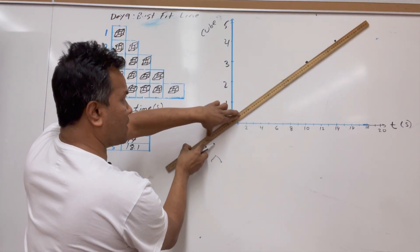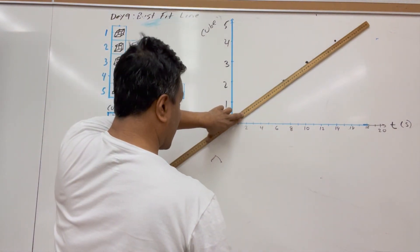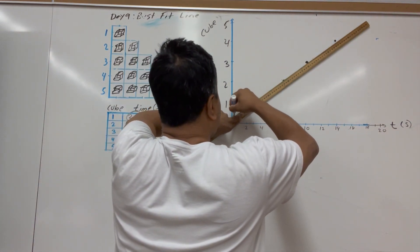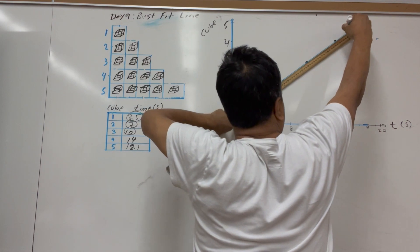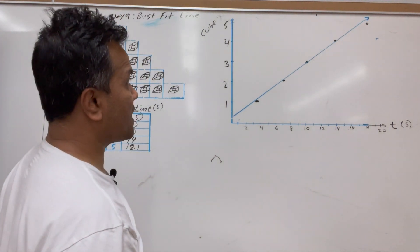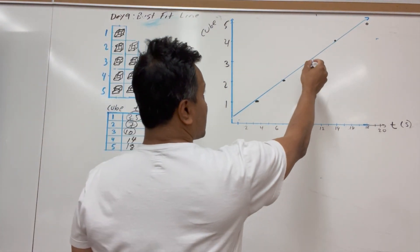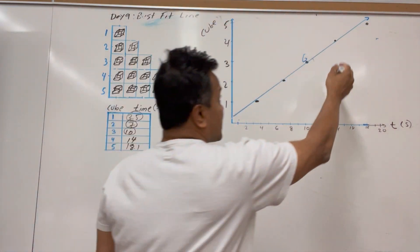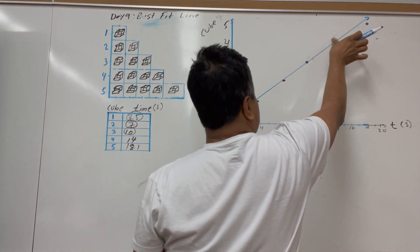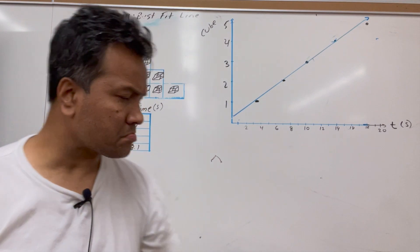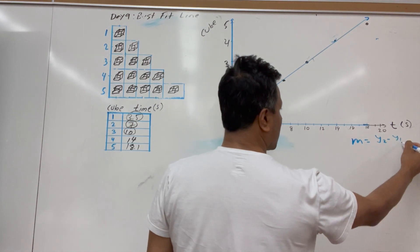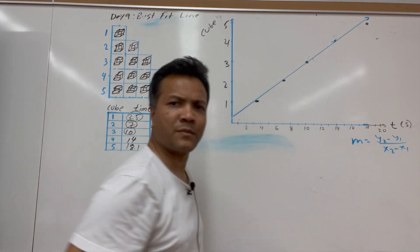There you go — if the ruler stays like that, that would be great. So fifty percent of the data — this data point and this data point — are above, and this data point and this data point are below. This is more or less a best-fit line. Now we want to find the slope: y2 minus y1 over x2 minus x1.